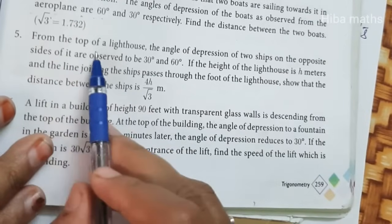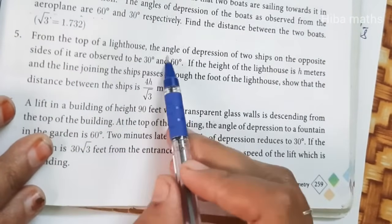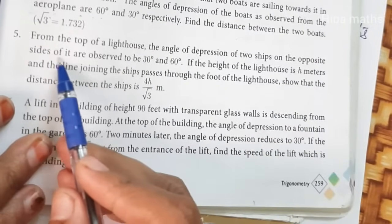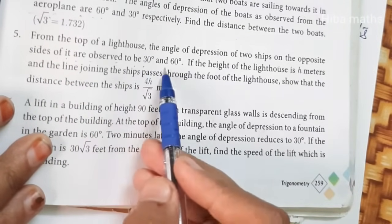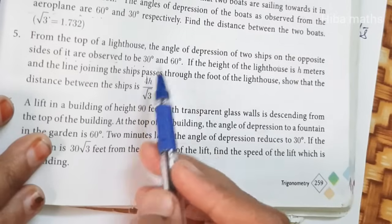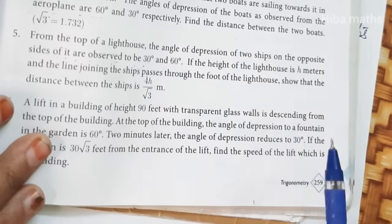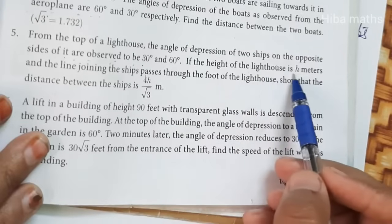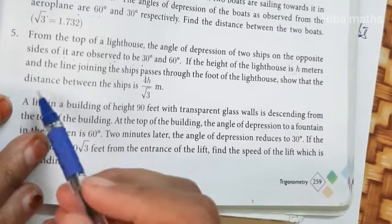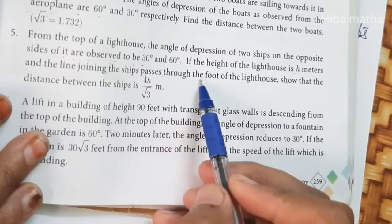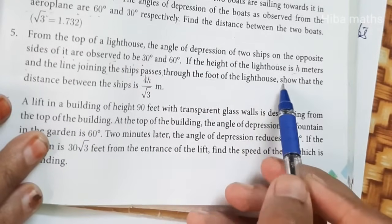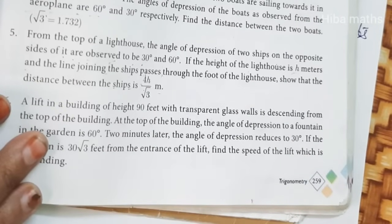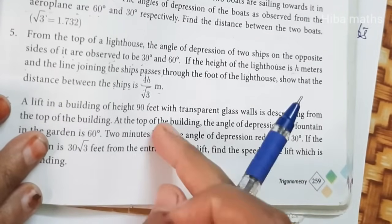The 5th question: From the top of a lighthouse, the angles of depression of two ships on opposite sides are observed to be 30 degrees and 60 degrees. If the height of the lighthouse is h meters and the line joining the ships passes through the foot of the lighthouse, show that the distance between the ships is 4h by root 3 meters.